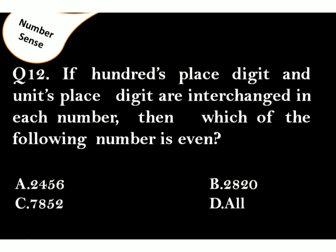If hundreds place digit and units place digit are interchanged in each number, then which of the following numbers is even? The answer is option D. Because in option A, B and C, number at hundreds and units place are even.